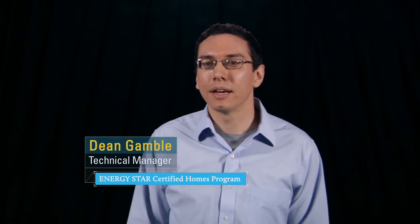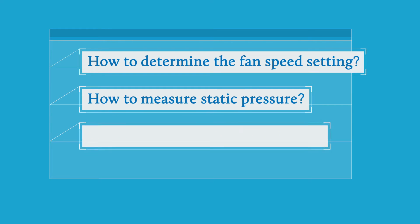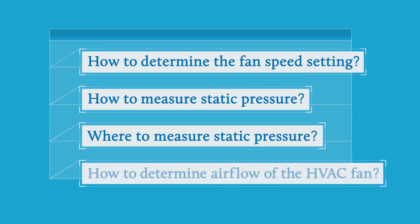Hi everyone, my name is Dean Gamble. I'm the Technical Manager for the ENERGY STAR Certified Homes Program. Our program requires raters and HVAC contractors to measure the airflow of the HVAC fan. This is the first and perhaps most valuable commissioning test to determine whether an HVAC system has been properly installed. In this video, we'll show you why this is so valuable. Then in the following four short videos, we'll show you how to determine the fan speed setting, how to measure static pressure, where to measure static pressure, and finally how you can use those two things to determine the airflow of the HVAC fan.